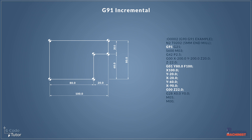So we would quite often use both of these during the course of programming a part. I personally would tend to switch to incremental when using drilling cycles and drilling multiple holes — that way I only need to give one position: the position between each hole, rather than the position from the machine datum. So that's a quick look at the differences between G90 absolute and G91 incremental positioning systems with our CNC machine.